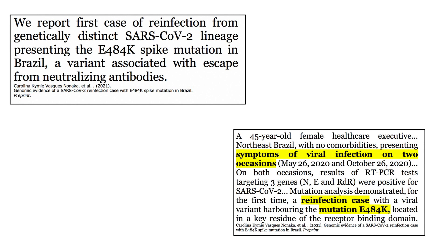The patient developed respiratory distress and shortness of breath. On both occasions, results of RT-PCR tests targeting three genes were positive for SARS-CoV-2, and genomic analysis of the viruses from both infections shows that in the second infection the virus had the E484K mutation, suggesting that this is the mutation which gave the virus the ability to evade the neutralising antibodies the patient would have developed upon the first infection in May.